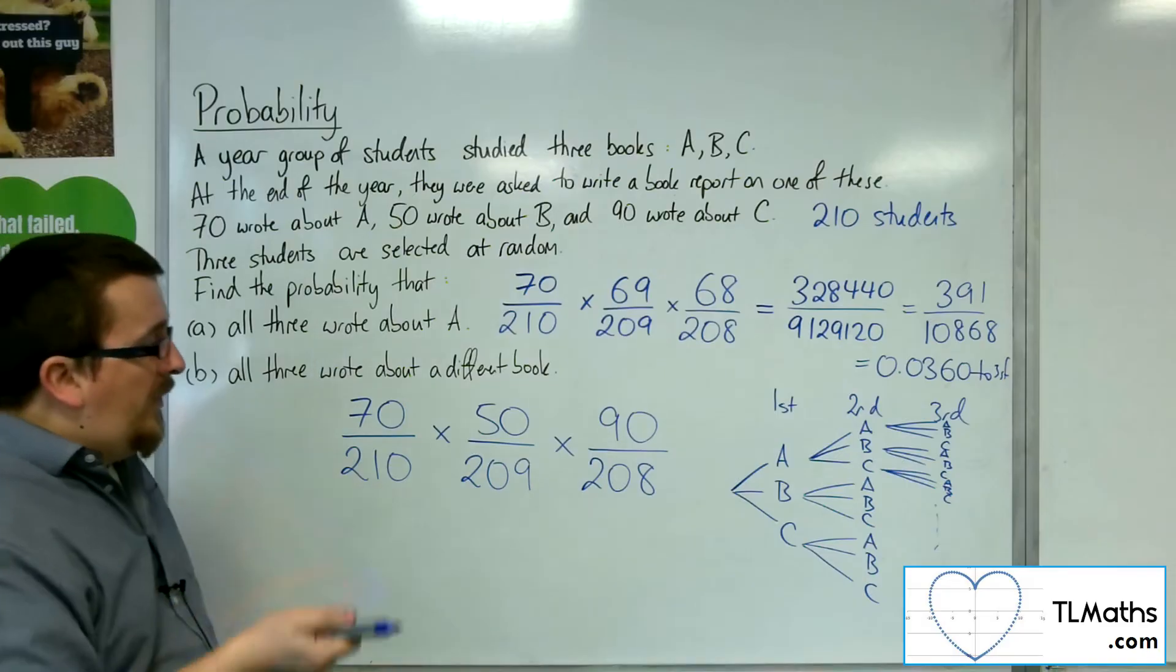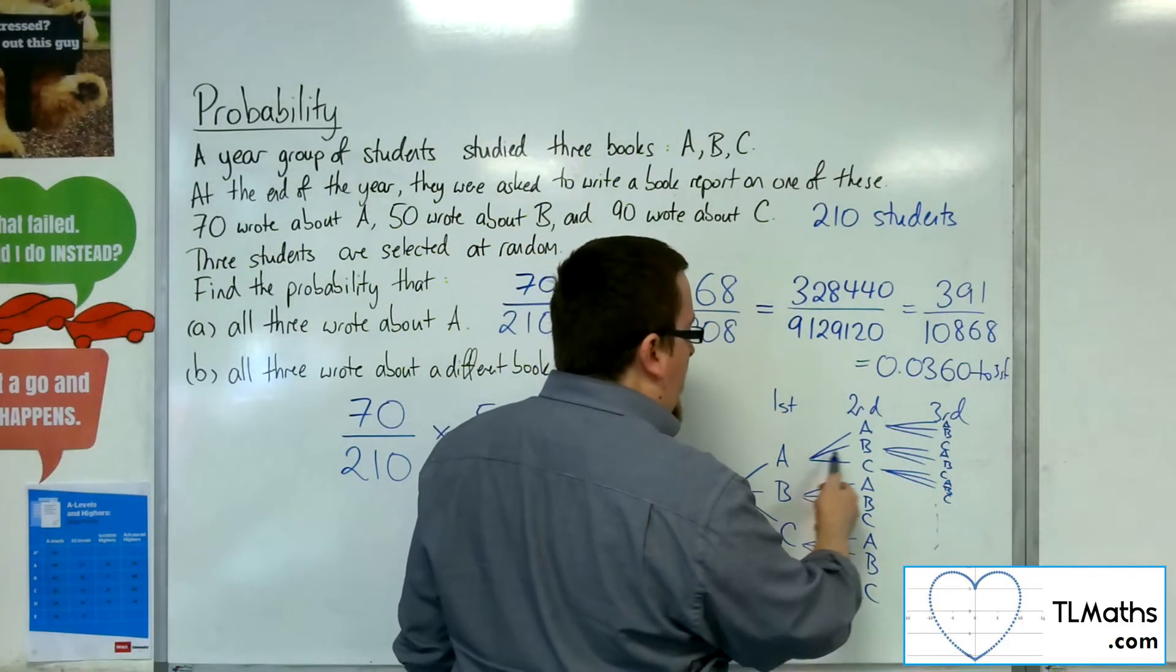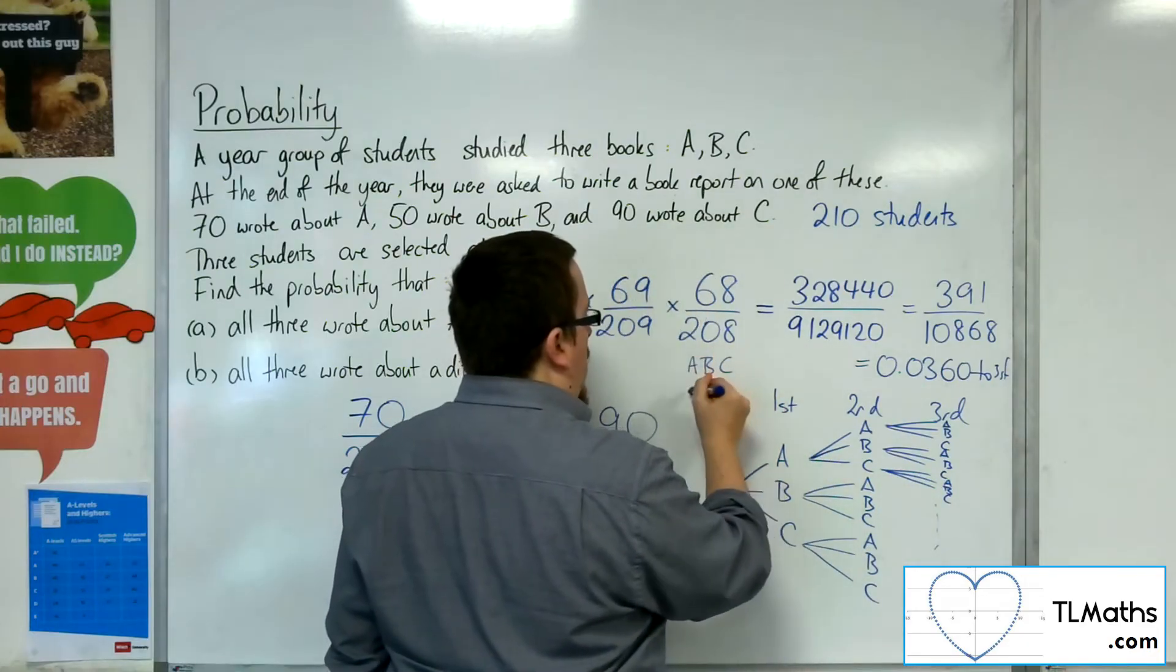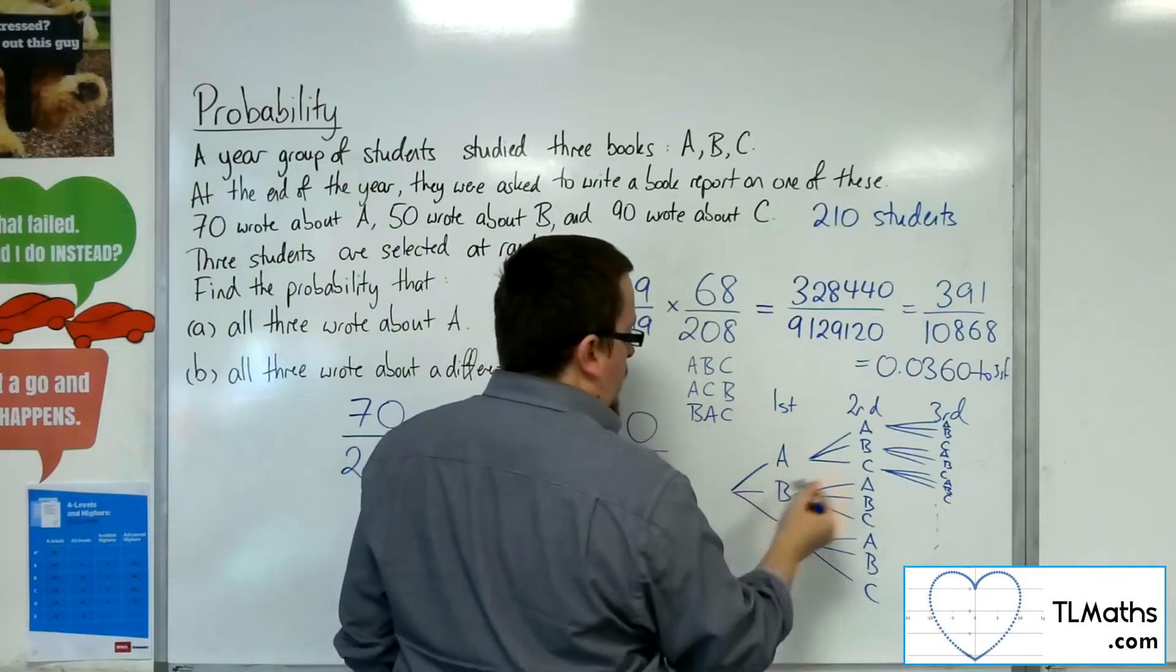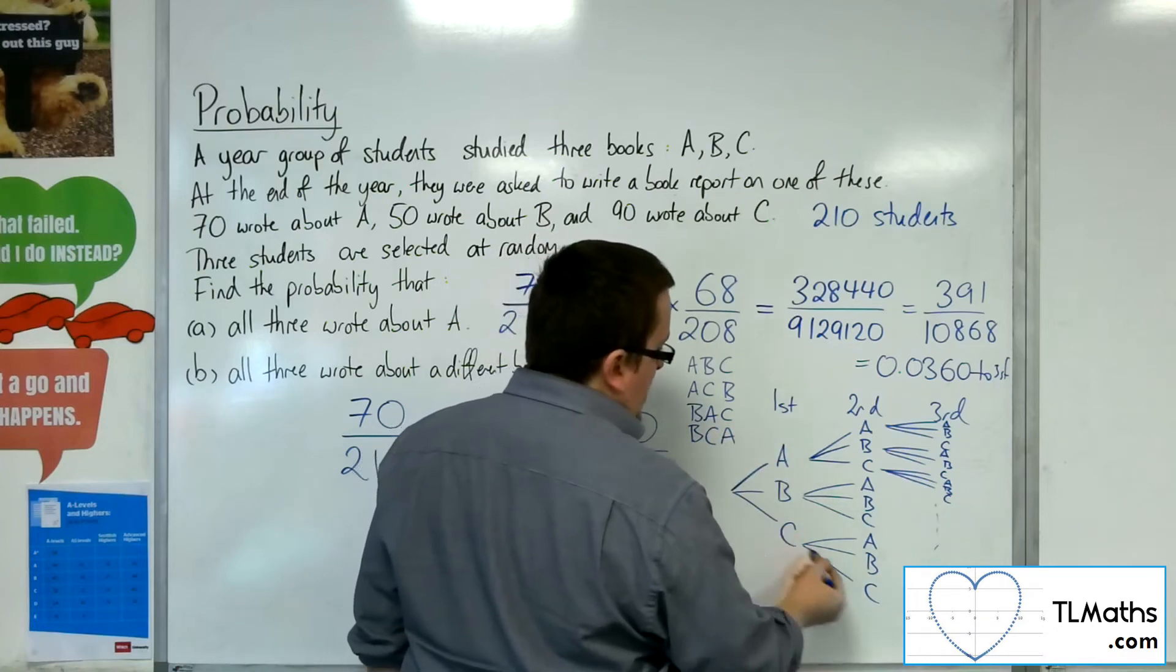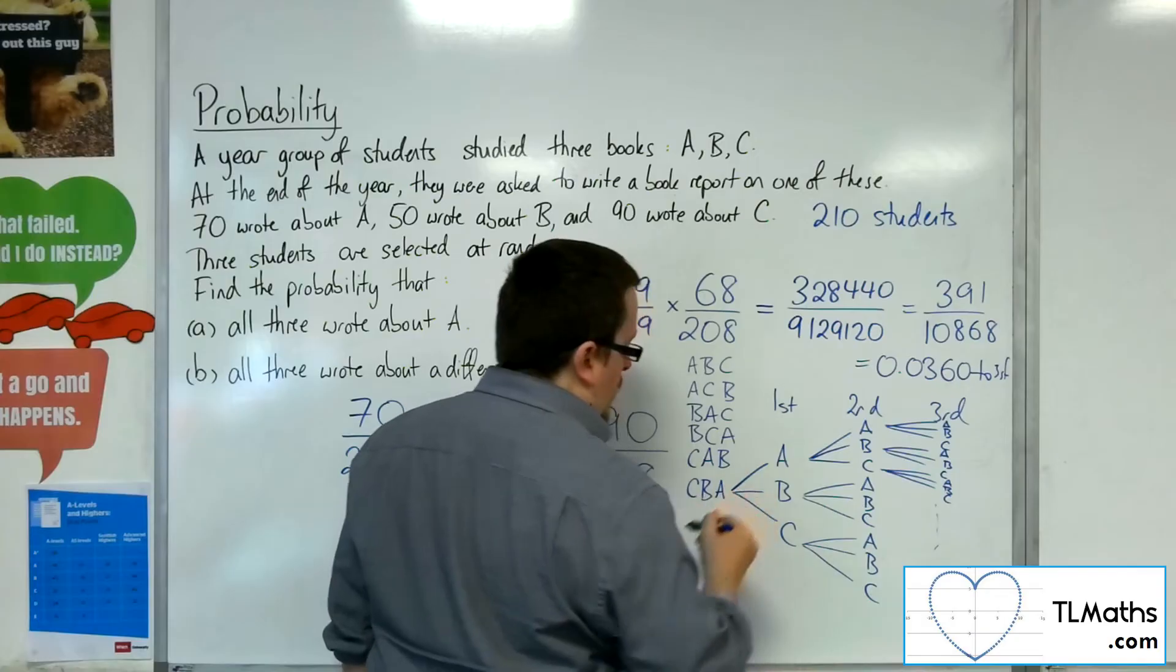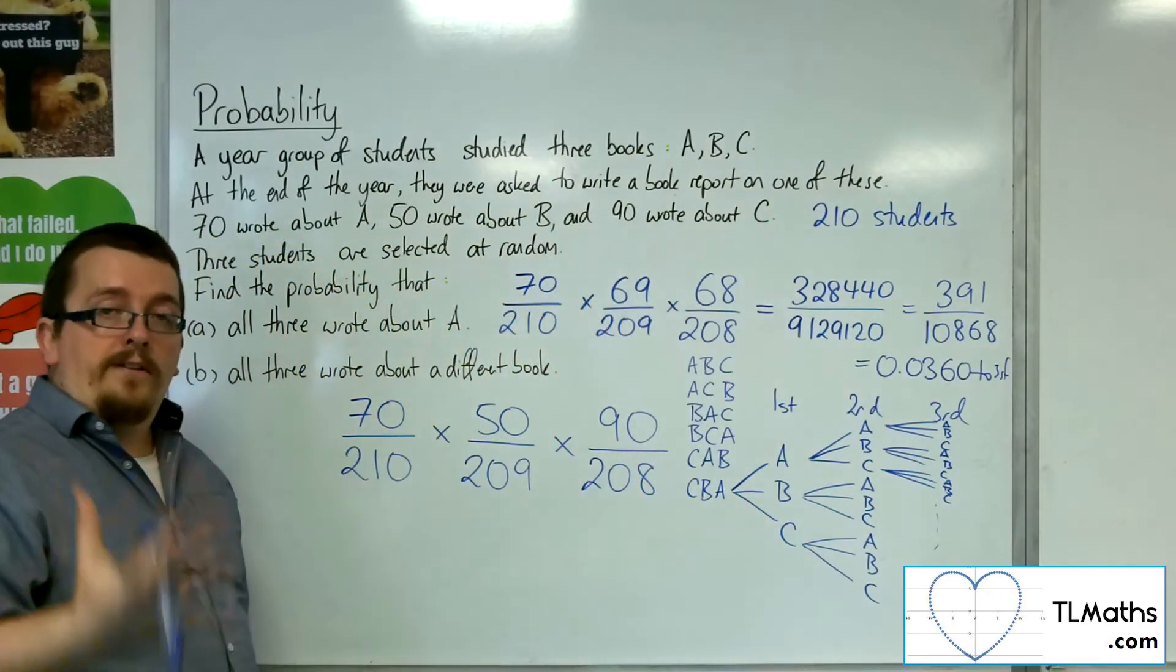However, for A, B, C, I could have had A, B, C; A, C, B; B, A, C; B, C, A; C, A, B; or C, B, A. So there are actually six different ways of doing that.